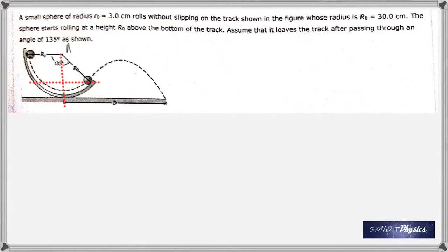The sphere is rolling on a track with radius 30 centimeters. It starts from here and shoots off from here. You need to find the speed at which the sphere leaves the surface and also the total distance that it travels along the x-axis.